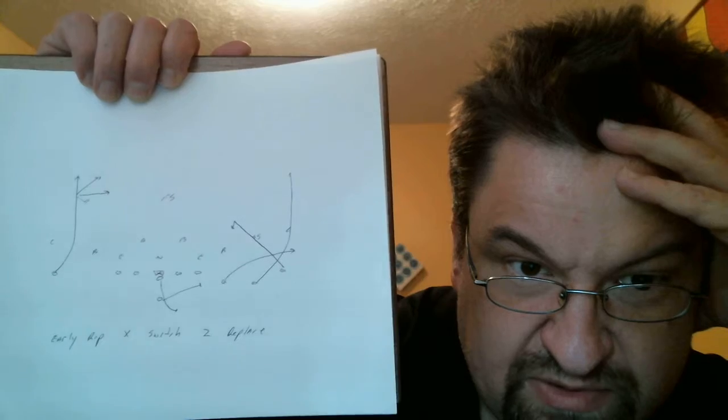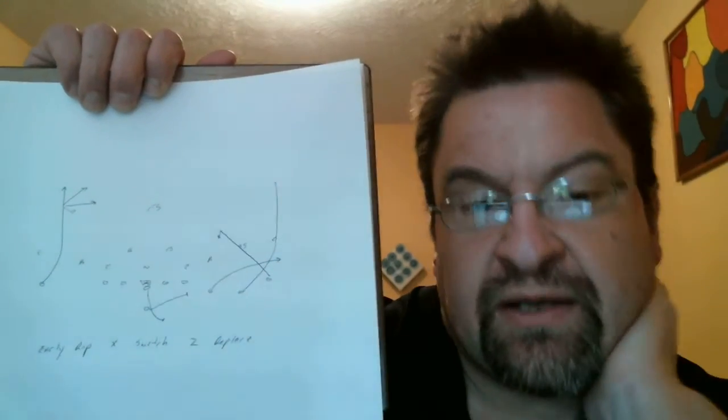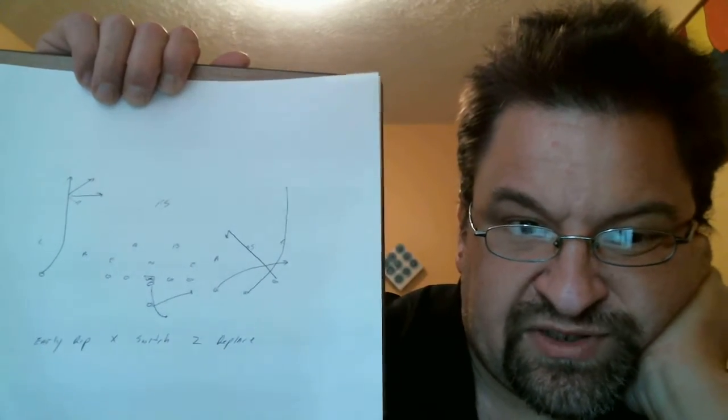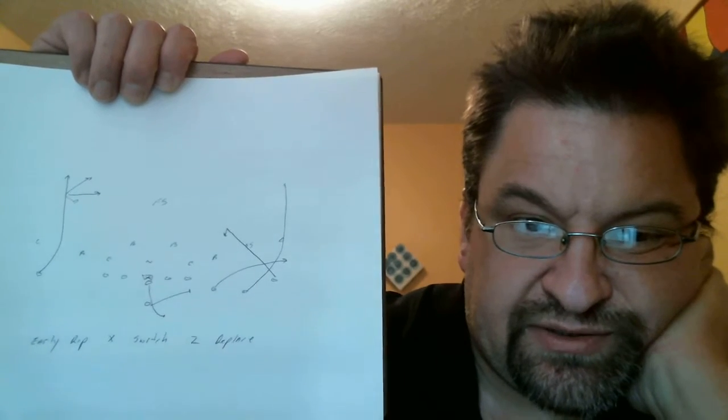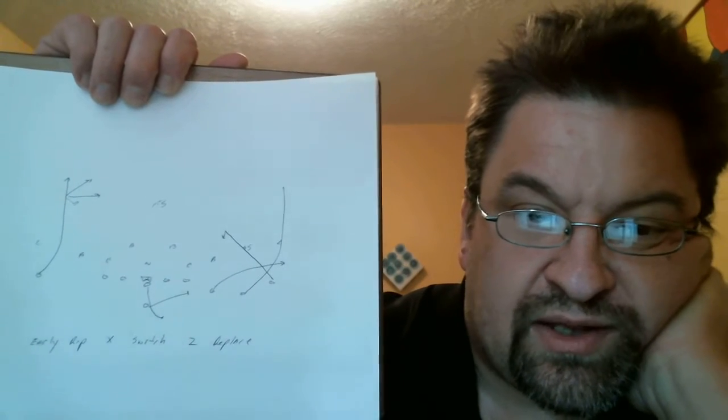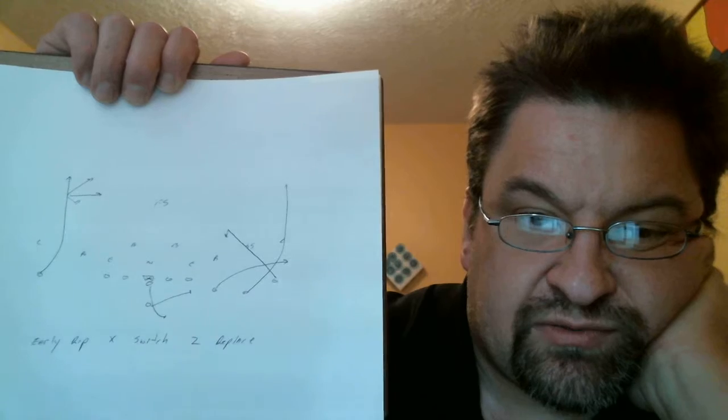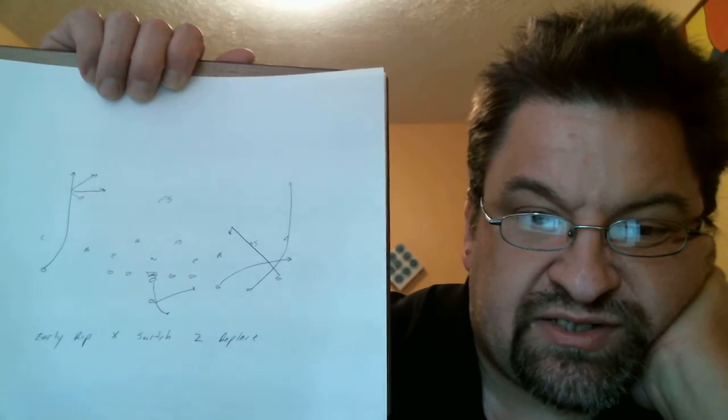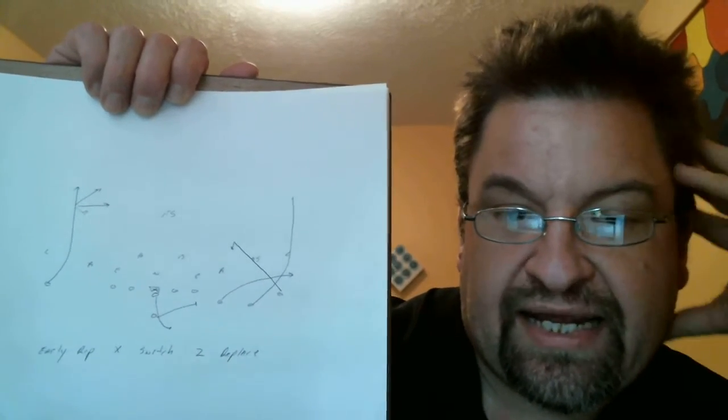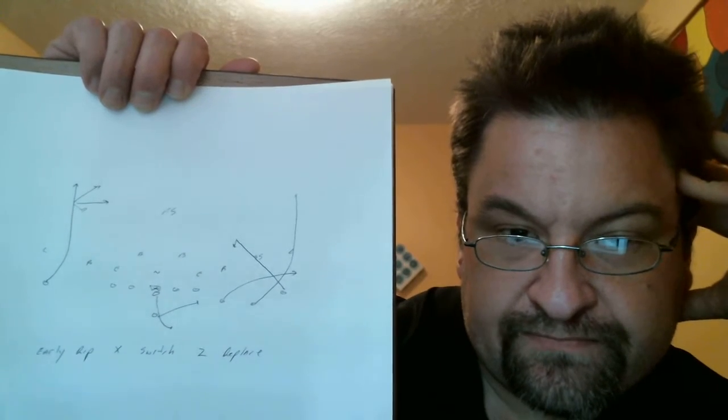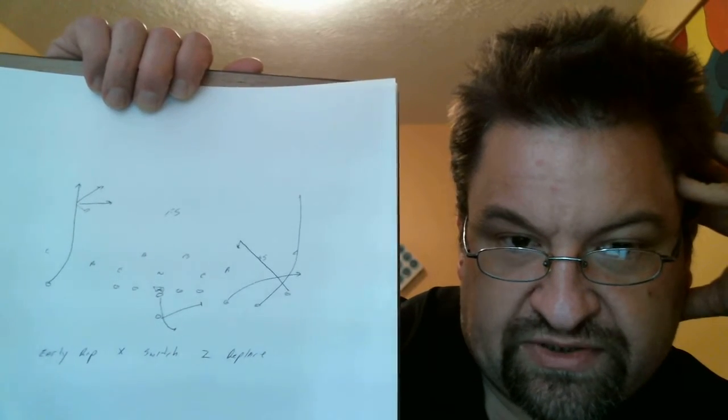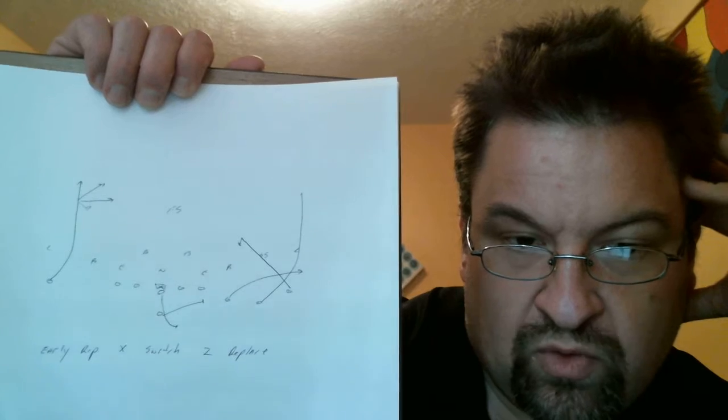Now on your trip side, you have the shoot route into the flat by your Y. Your wing is gonna run a switch wheel, and your Z is gonna run a replace - it's basically a straight line hook route back over Y's original alignment. Quarterback's gonna do the half roll, watching that flat defender. Does that flat defender chase the shoot route?